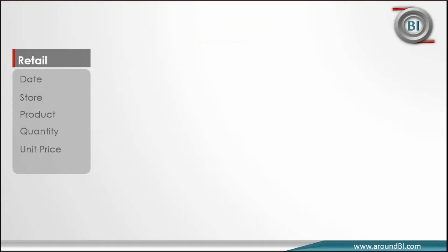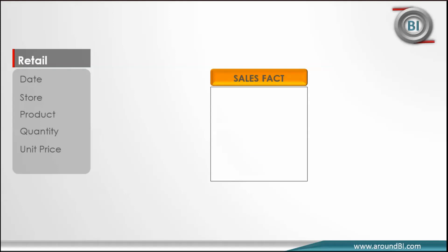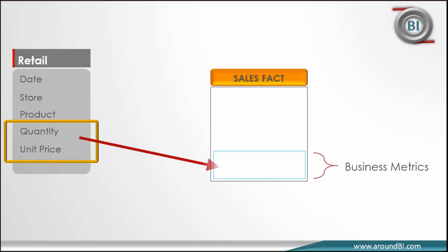A fact table stores quantitative information for analysis and is often denormalized. Let's construct a fact table for our available data set. Since we store numeric measures in the fact table, the first part consists of business metrics — all the measures go to the fact table. So quantity and unit price will go as columns in our new fact table. Fact tables are often defined by their grain, which represents the most atomic level by which the facts may be defined. Our store information loads data for each day, so here the grain is day.